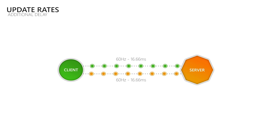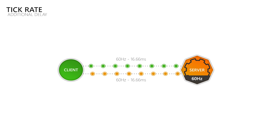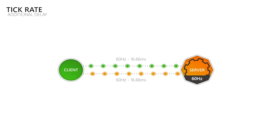But where is that data coming from? This is where the term tick or simulation rate comes into play, which is how many times per second the game processes and produces data. So when you have a tick or simulation rate of 30, then this will cause more delay than when you have a tick rate of 60, which also allows update rates of 60Hz then.